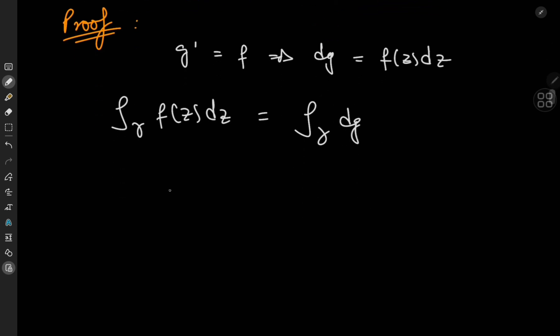Now what exactly is g? Here g is a complex-valued function g(z). We know we can treat complex-valued functions as functions of the real and imaginary parts of their arguments, so we can write g as g(x, y), where x and y are respectively the real and imaginary parts of the complex variable z.